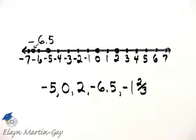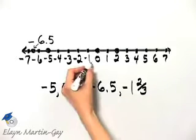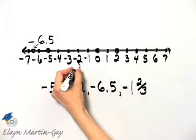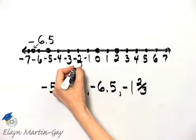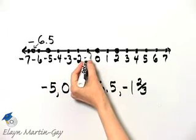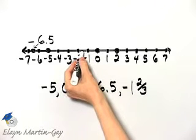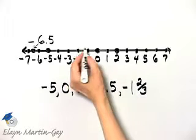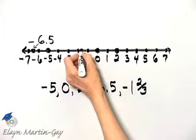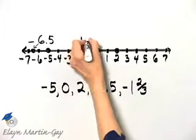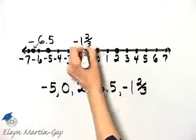And then let's graph negative one and two-thirds. There's negative one, and there's negative two. Negative one and two-thirds is going to be, here's negative one, and then I'll move two-thirds of the way toward negative two. I'll place a dot here, and that is the graph of negative one and two-thirds.